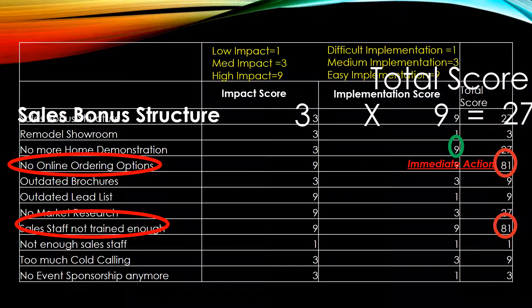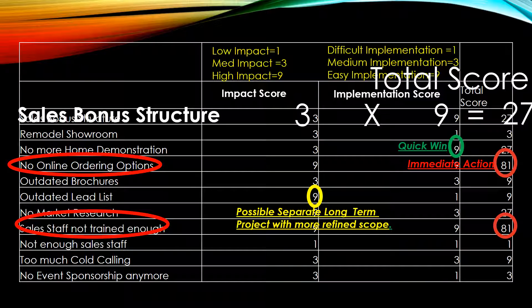It's important also not to ignore: anything with a 9 on implementation — very easy to implement — even if it's low impact, those are quick wins that can be done as a secondary measure. Anything with a 9 on impact that's difficult to implement needs some thought, because maybe that's a possible separate long-term project with a more refined scope. For example, dealing with an outdated lead list might be very difficult to get updated, but if it has big impact it's worth looking into long term. In the meantime, jump on the immediate action items — no online ordering options and the sales staff not being trained well enough: big impact, easy to get done.